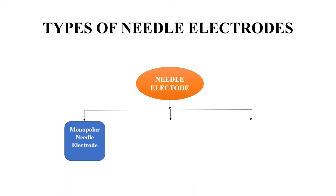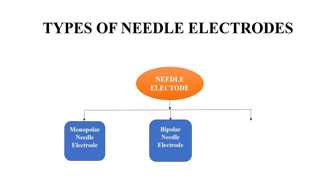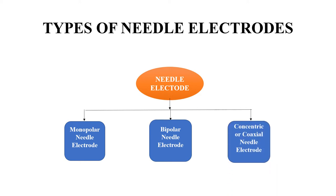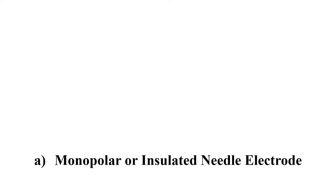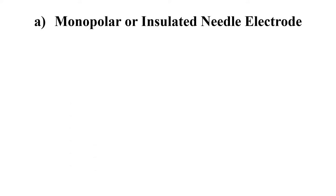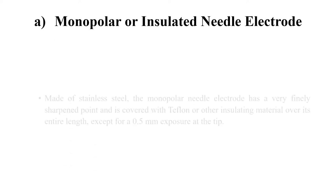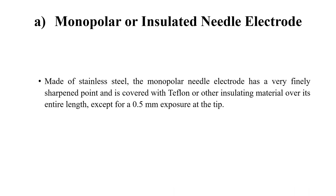Next, we will see the types of needle electrodes. The first type is the monopolar needle electrode, then the bipolar needle electrode, and then the concentric or coaxial needle electrode. First, we will discuss the monopolar or insulated needle electrode.